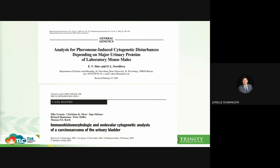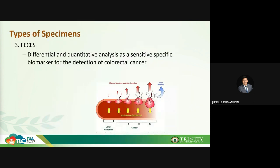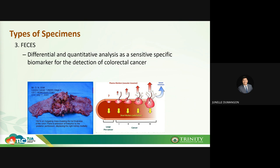We can also use stool or feces, which is used for the detection of colorectal cancer. In colon cancer, a tumor growing in the large intestine will exfoliate or shed cells that come into contact with feces. Once we check feces for the presence of those exfoliated cancer cells, we can diagnose colon cancer or colorectal cancer.